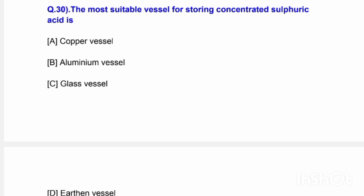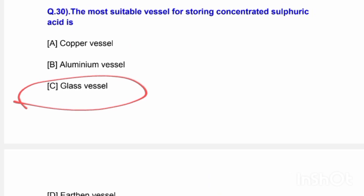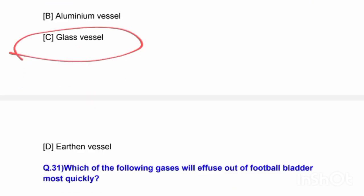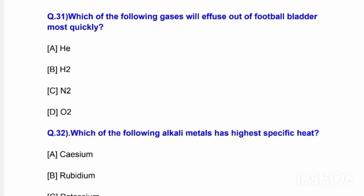Question number 30: The most suitable vessel for storing concentrated sulphuric acid is — options are copper vessel, aluminium vessel, glass vessel, and earthen vessel. The correct answer is option C — glass vessel.